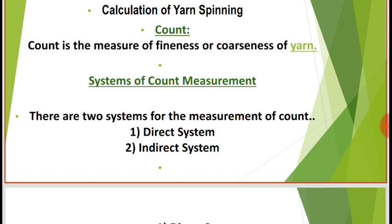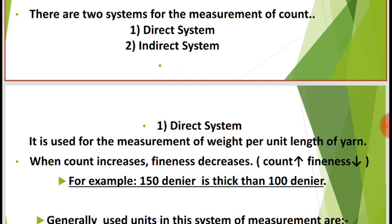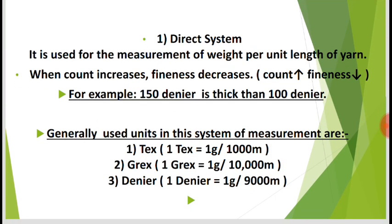One: the direct system. It is used for the measurement of weight per unit length of yarn. When count increases, fineness decreases — count up, fineness low. For example, 150 denier is thicker than 110 denier. Generally used units in this system of measurement are: Tex, Dtex, and Denier.